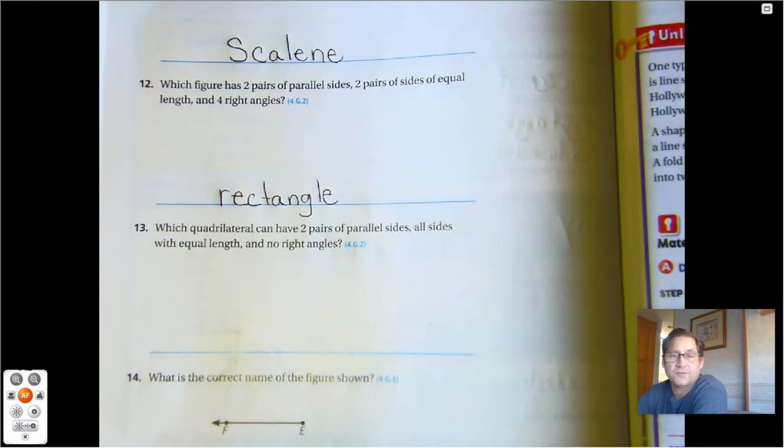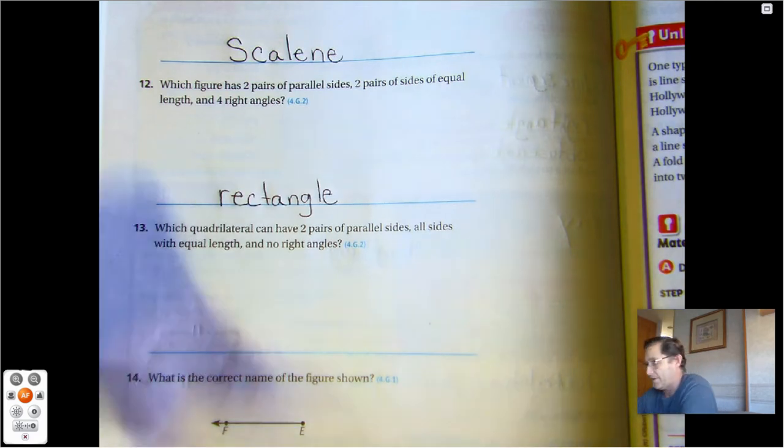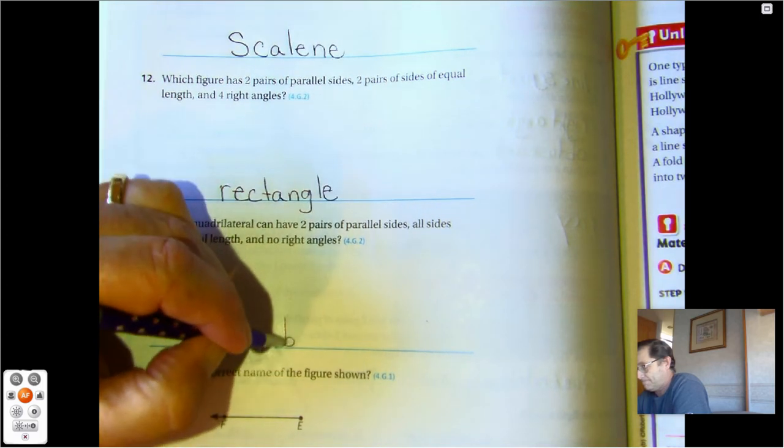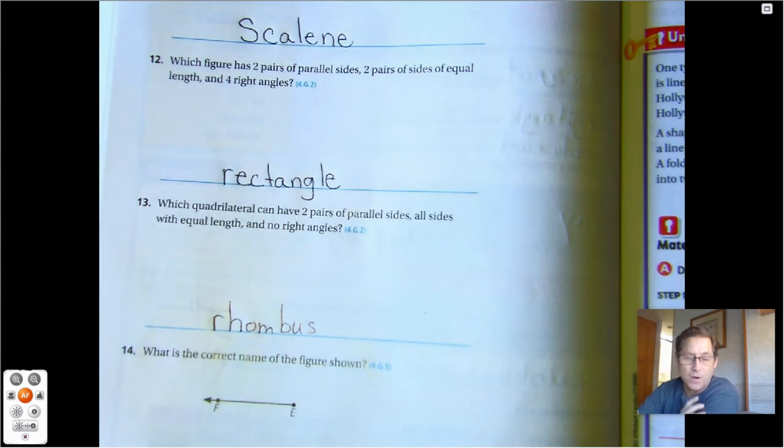Which quadrilateral can have two pairs of parallel sides, all sides with equal length, and no right angles? Well, that would be a rhombus. It says no right angle, so it's not a square.